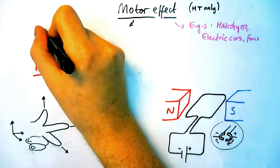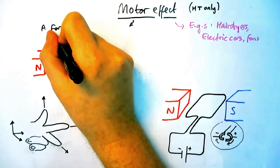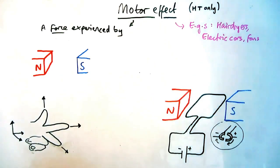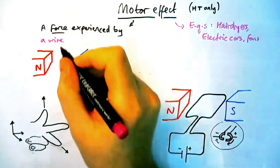Now the motor effect itself is a little bit tricky but in definition terms it is a force experienced by a wire or any current carrying conductor when placed in a magnetic field.